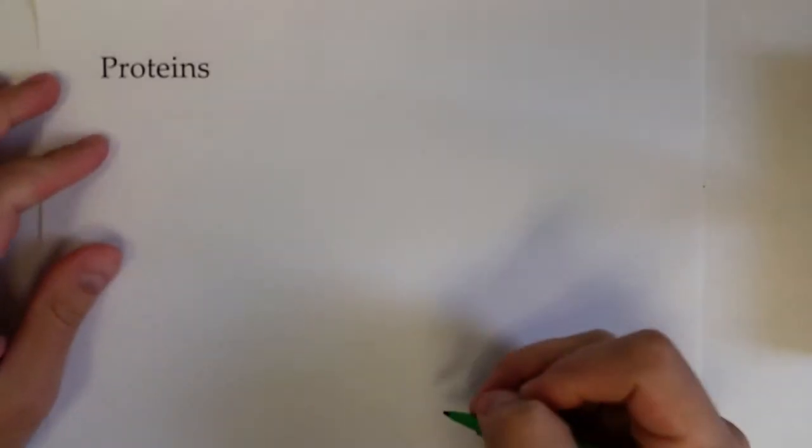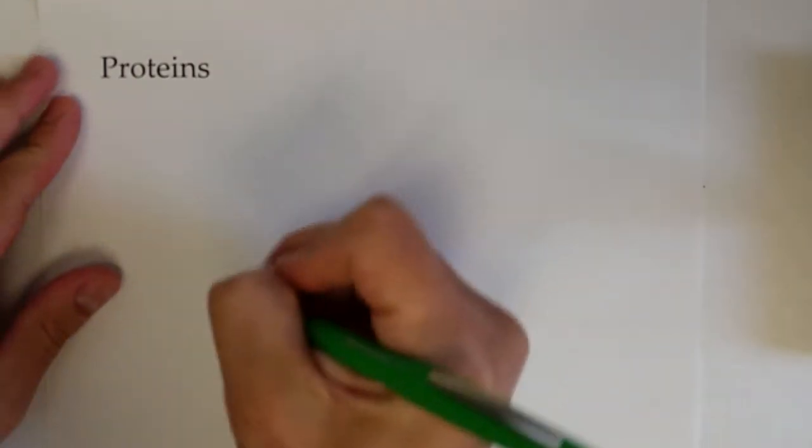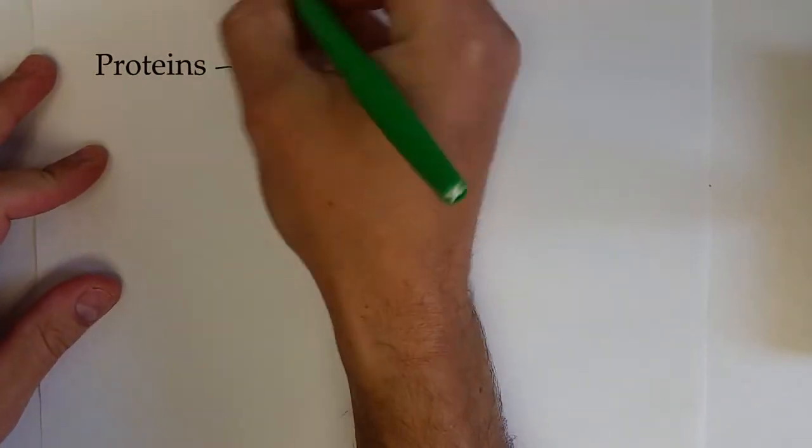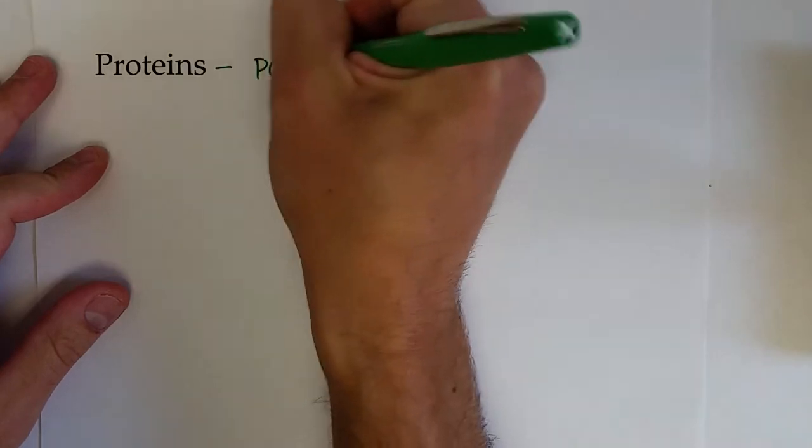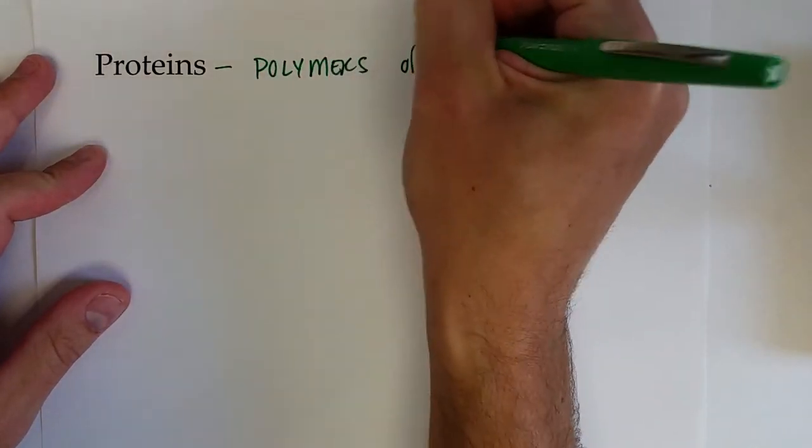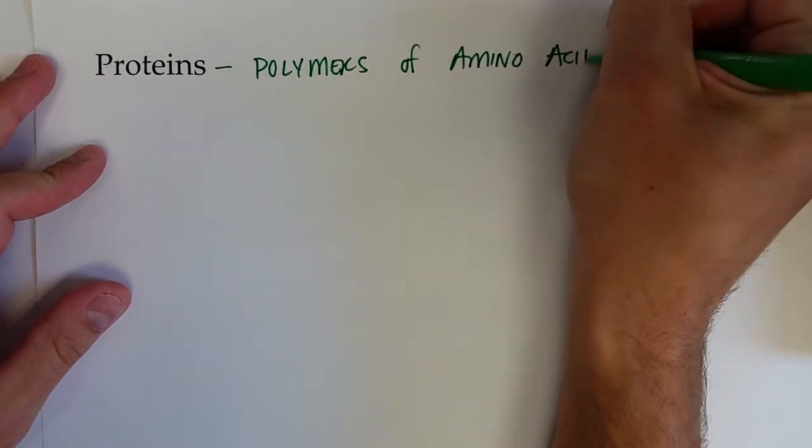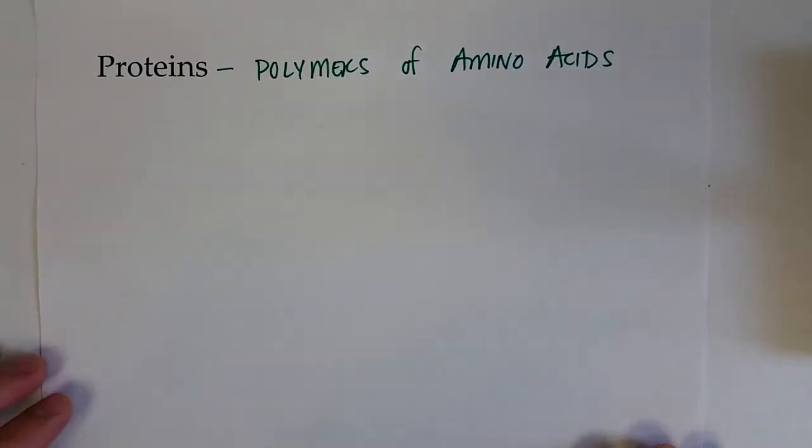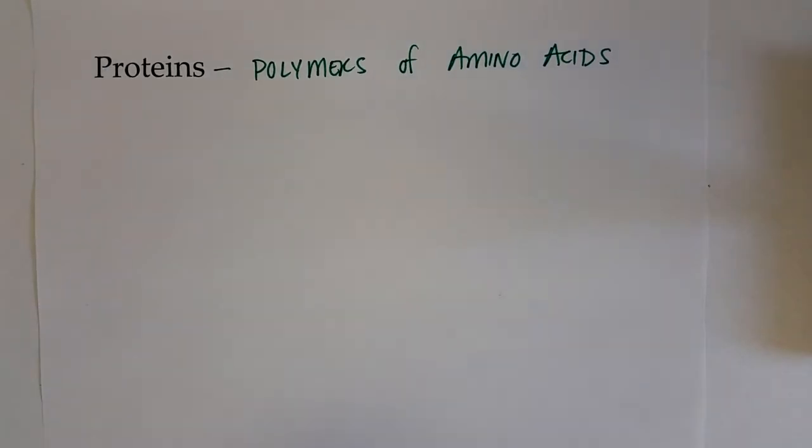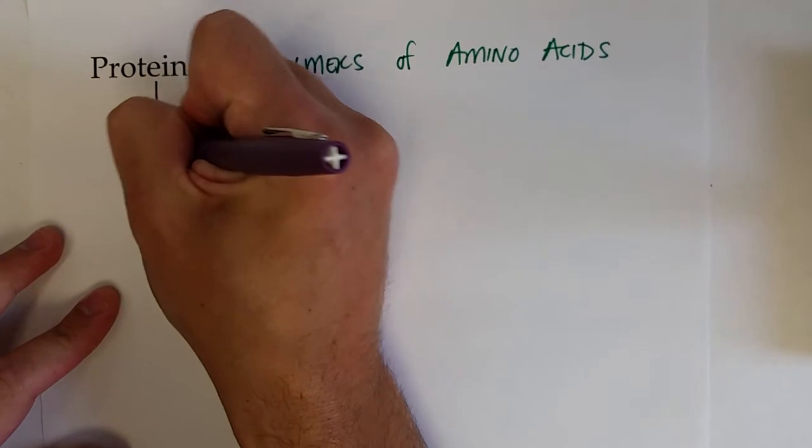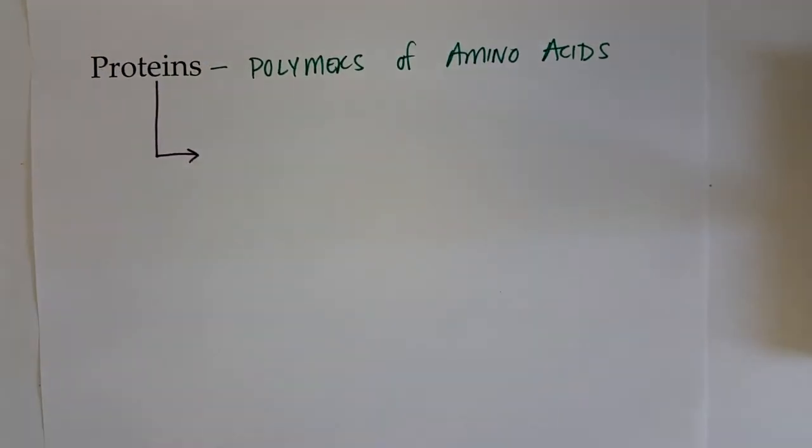So the next type of biological molecule that we're going to discuss are proteins. Proteins are polymers of amino acids. DNA gets a lot of the headlines in terms of biological molecules, but probably most of the work and biochemical reactions done in your body and most of the structural components are due to proteins.